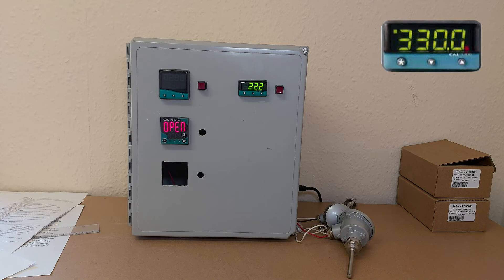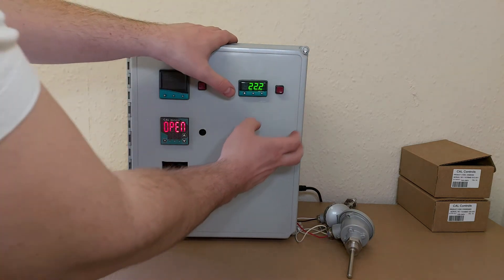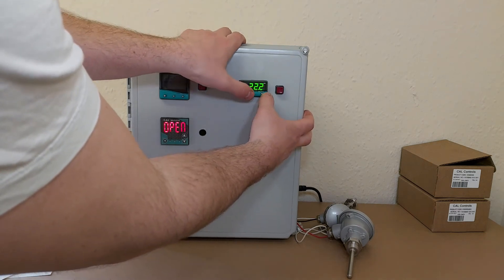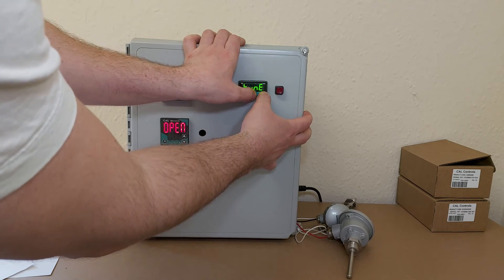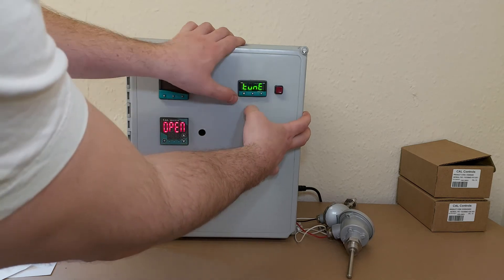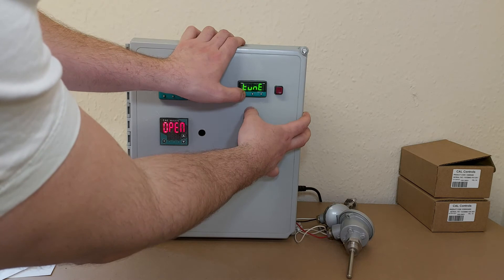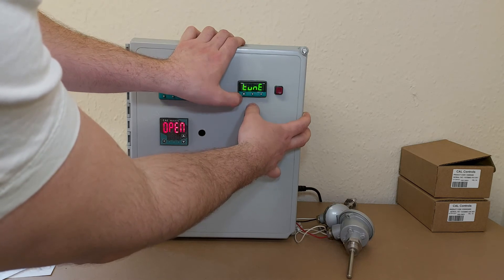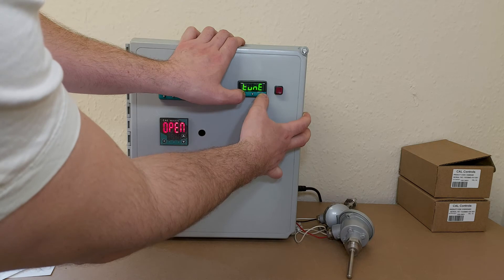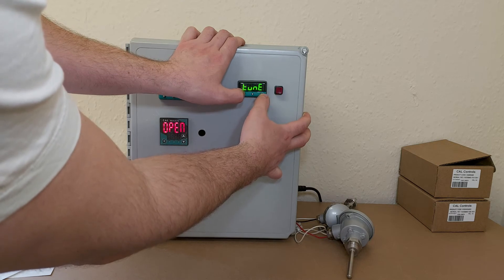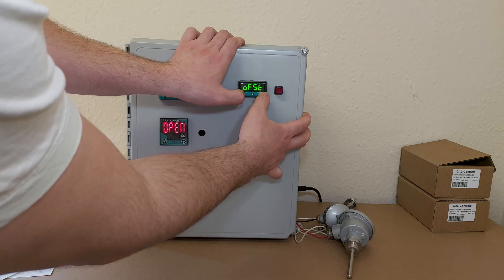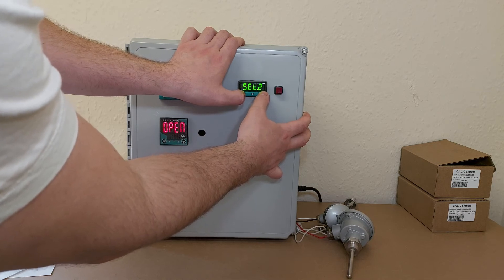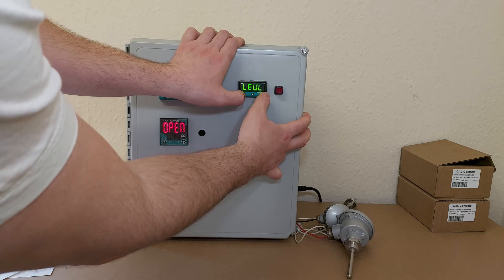Okay, so I am now going to set up the CAL3300 for the RTD input. So the first thing we want to do is get into program mode. We hold the up and down arrows and then we get into one of the menus. We want to flip through the menus until we get to level.